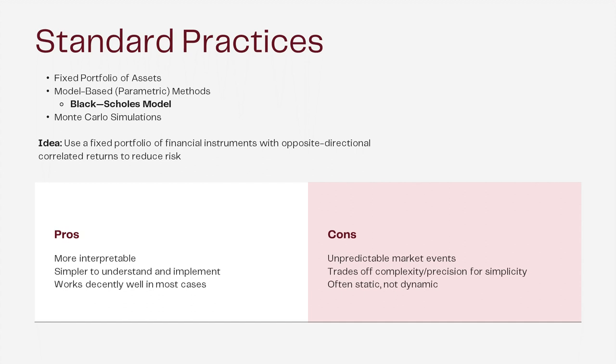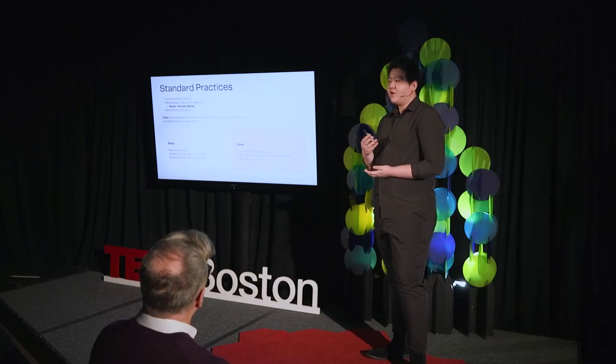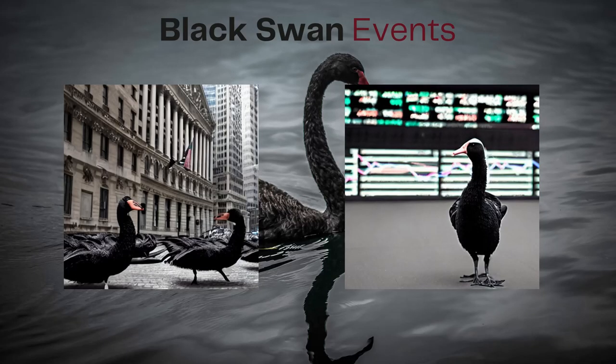The current financial industry standard uses a model called Black-Scholes, which models stock prices in a certain path. This is very theoretical, but these models are theoretically sound — they're simple and interpretable, which is a really good thing for Wall Street investors who want to understand how their model works. But the cons are that parametric models, which assume how the market moves, are sometimes very inaccurate, trading off complexity and precision for simplicity.